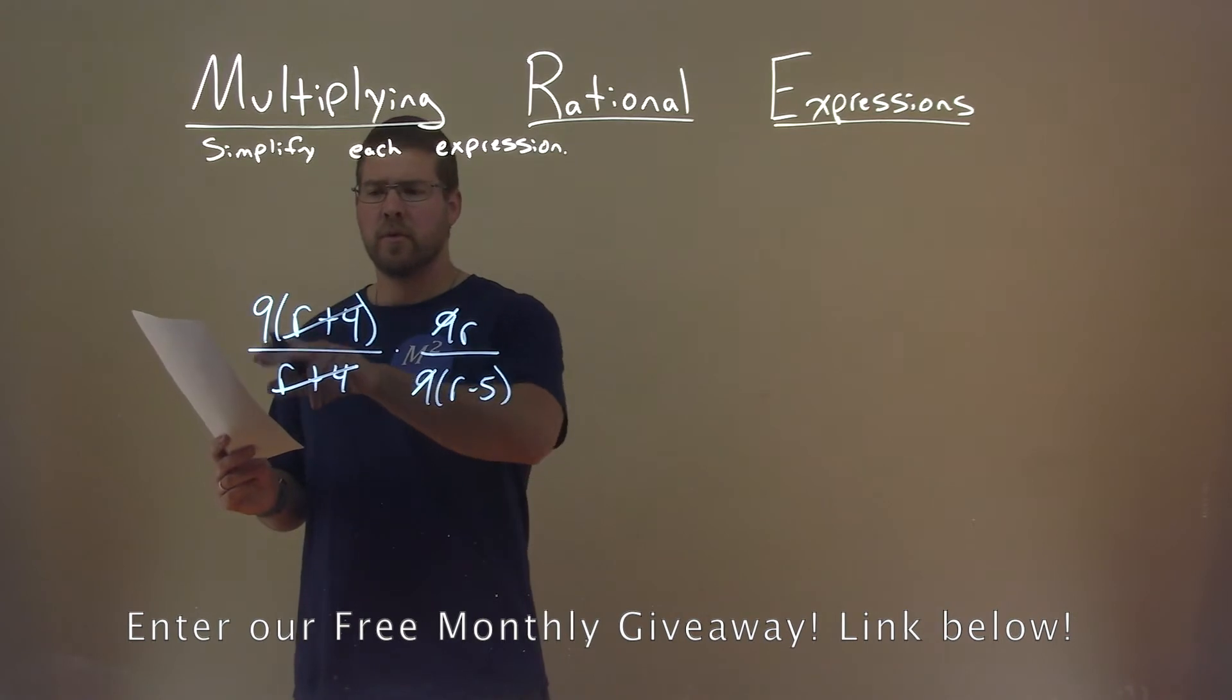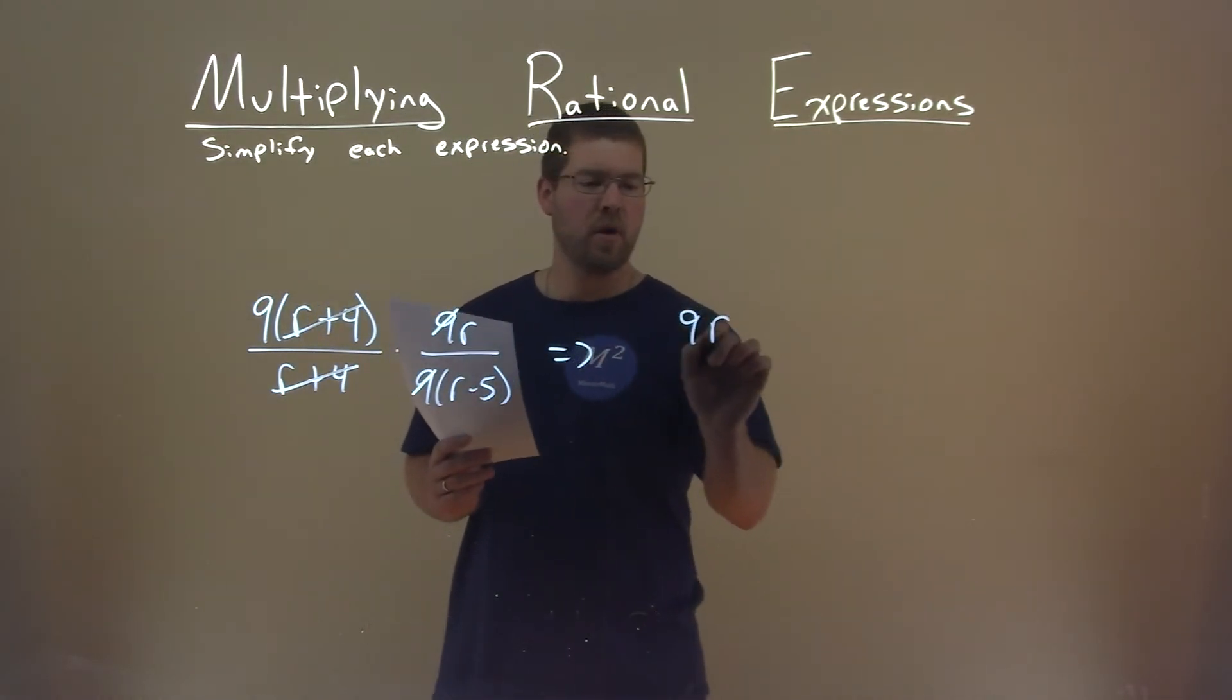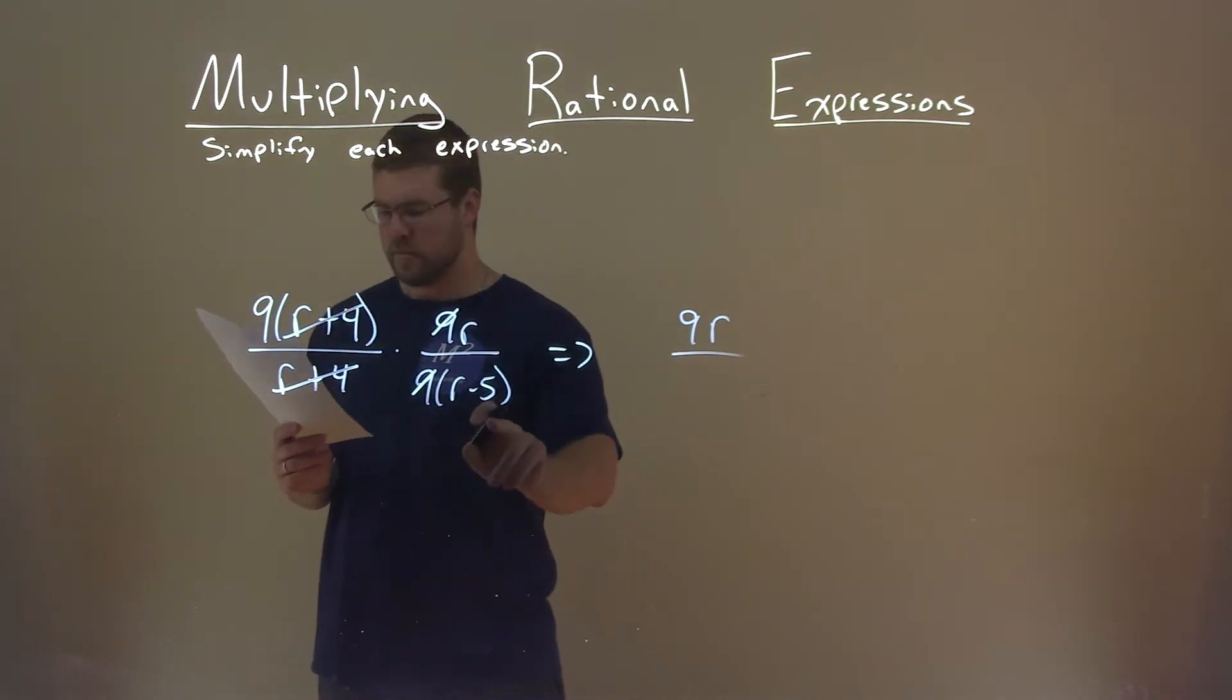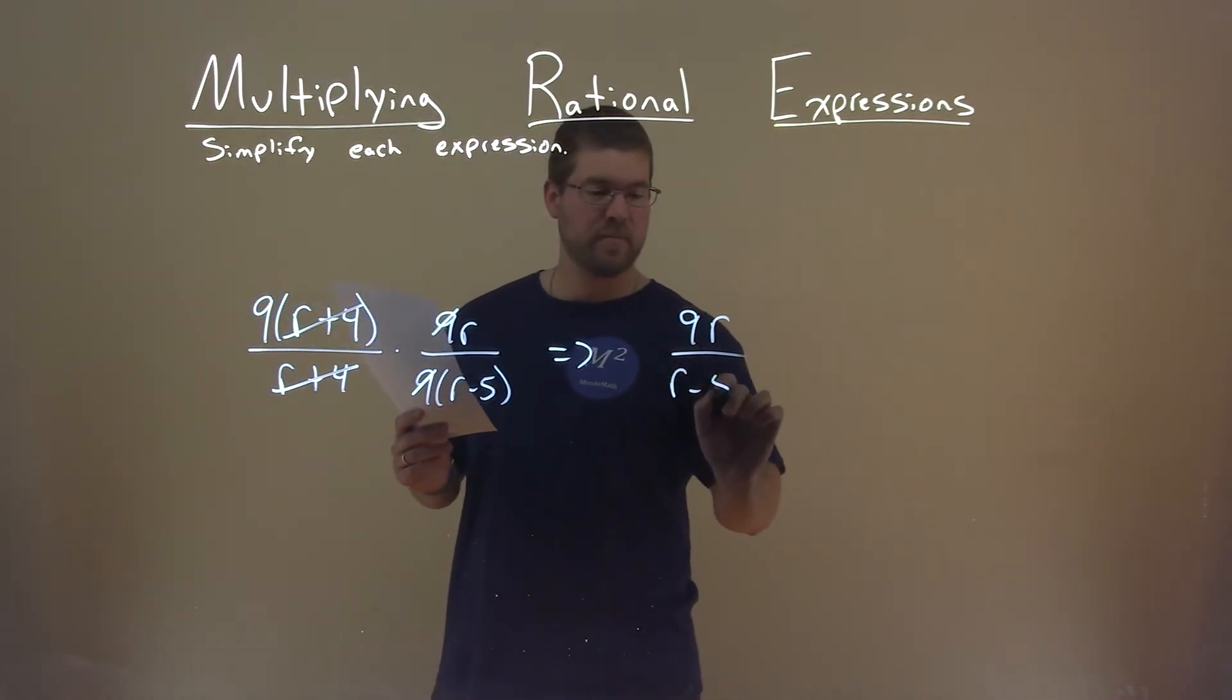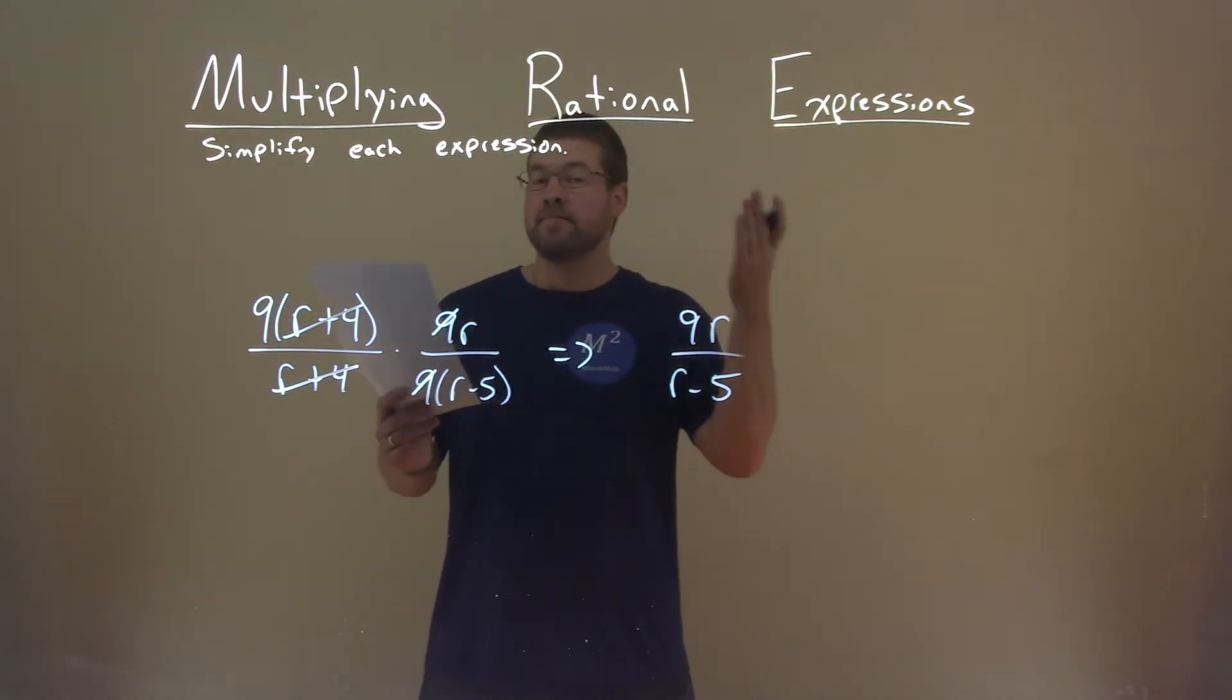So let's go multiply across the numerator. 9 times r is just 9r. Denominator, we're left with just r minus 5. And so 9r divided by r minus 5 is our final answer.